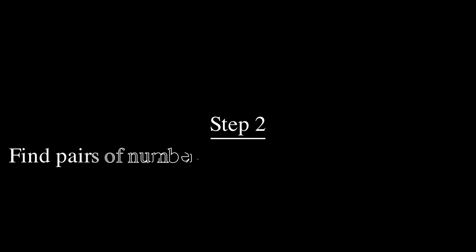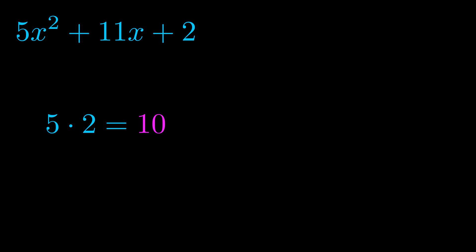Step two is to try to find all of the pairs which multiply to this number. Now it turns out you don't really need to find all of them, but go ahead and write down as many numbers as you can that multiply to the magenta value for now. Pause the video and resume when you're ready to continue. Okay, here's what I came up with.